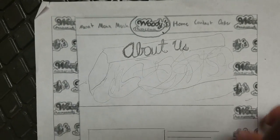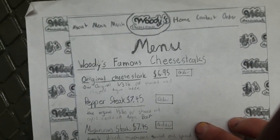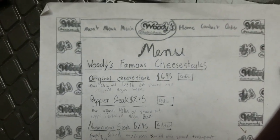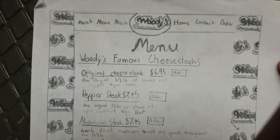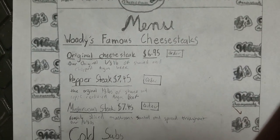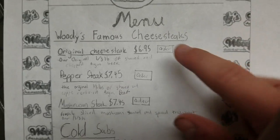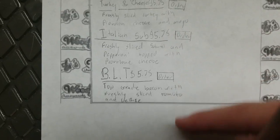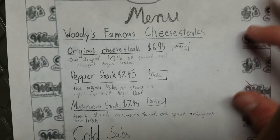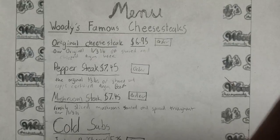If you're hungry and just want to order something, you click on the Menu. This is the menu page — it uses the same font to add continuity. It's mostly text, but organized into main categories: cheesesteaks, cold subs, and further down, shakes and other products and drinks they sell.